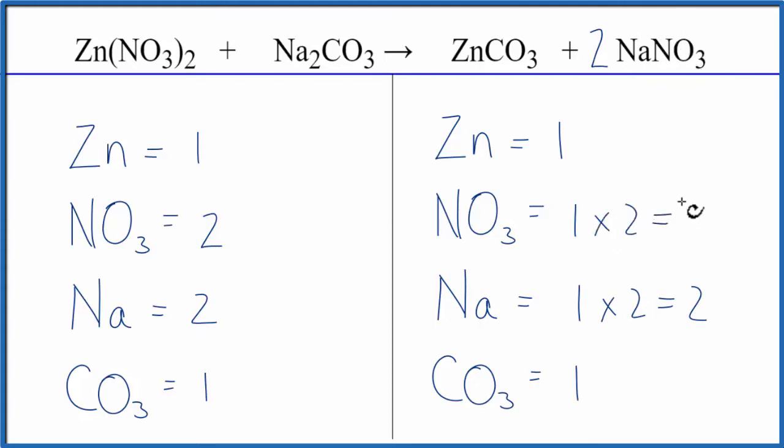And I'm done, this equation is balanced. So by treating these polyatomic ions as one item, if they appear on both sides of the equation, that makes it quite a bit easier to balance.